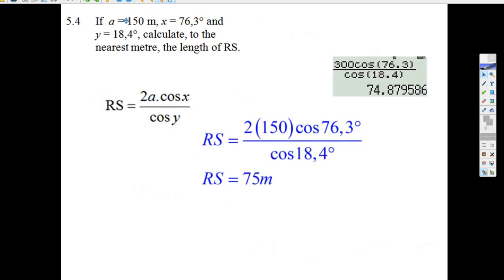The last question just says, okay, if A equals 150 and X equals this angle and Y equals this angle, calculate the length. Well, this question is the easiest one in the whole exam because all you have to do, they've given you all the things, is there's the formula. Take A is 150.